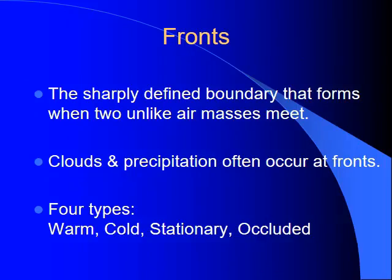Fronts are sharply defined boundaries that form when two unlike air masses meet. When you have that boundary between, say, a cool moist air mass and a warm dry air mass, that's going to be a front. We often get clouds and precipitation at fronts. There are four types of fronts: a warm front, a cold front, a stationary front, and an occluded front.